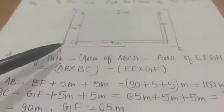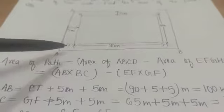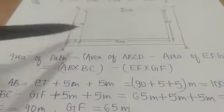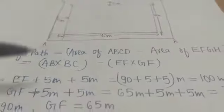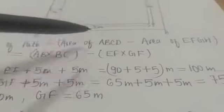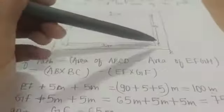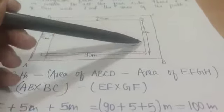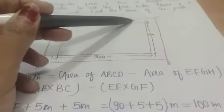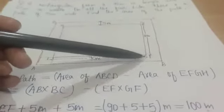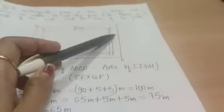First we find the dimensions of the bigger rectangle ABCD. The length AB equals the inner length EF plus 5 meters from the left and 5 meters from the right, giving AB as 100 meters. Similarly, the width BC equals 65 plus 5 meters from the upper side and 5 meters from the lower side, giving BC as 75 meters.